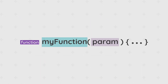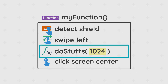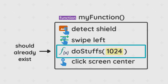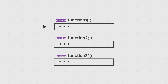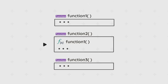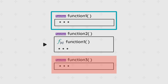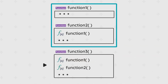The naming of functions follows the same rules as variables. Functions can also call other functions within them, provided that the other functions have been defined beforehand. For example, the first function cannot call the others because they haven't been defined yet. The second function can only call the first, and the third function can call both the first and the second.